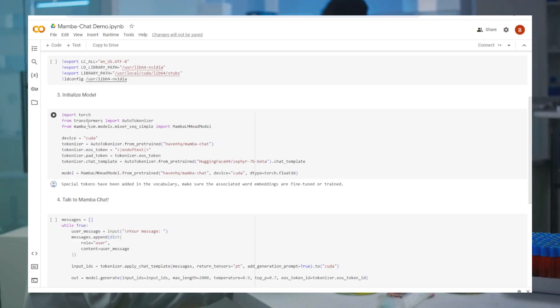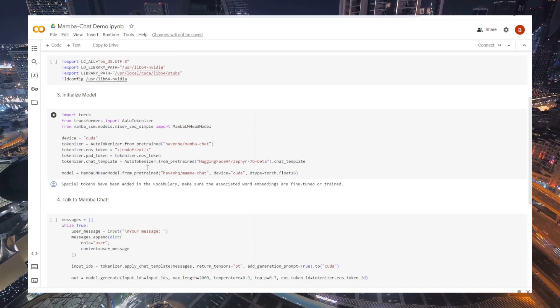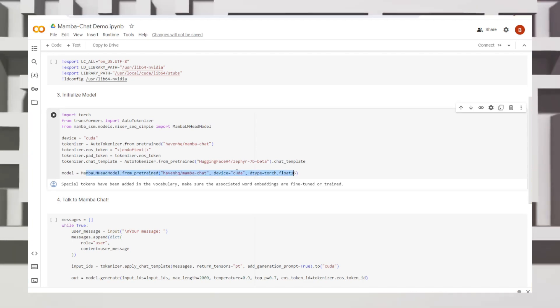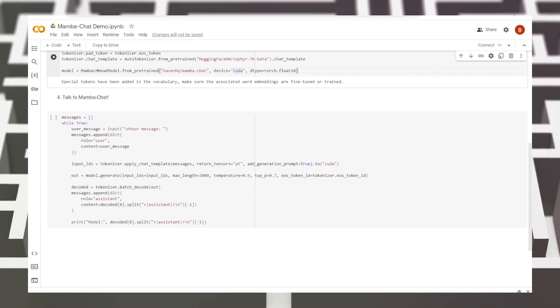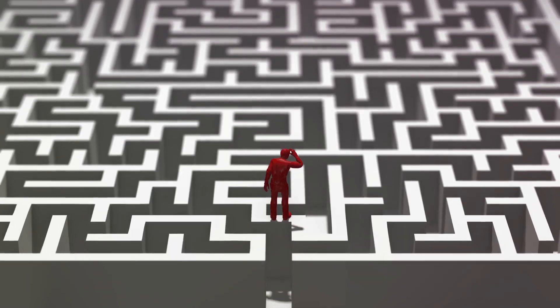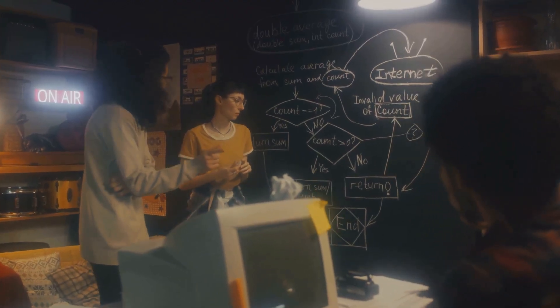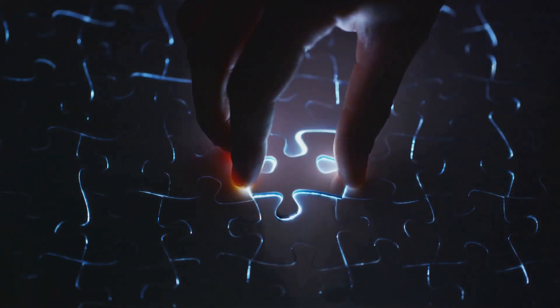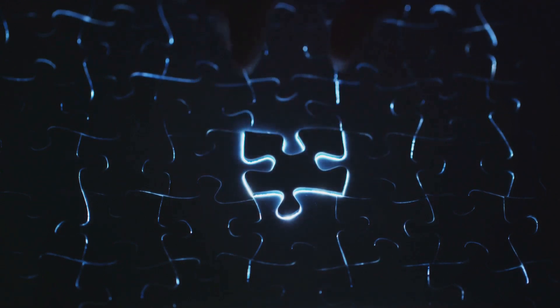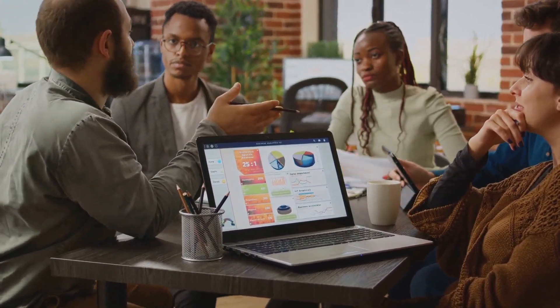Together, Mamba and LLMs create a dynamic duo that is shaping the future of technology. They are pushing the boundaries of what's possible, opening doors to new possibilities and opportunities. They are redefining how we approach and solve complex problems, making it easier and more efficient to find solutions. It's not just about the individual strengths of Mamba and LLMs, but about the synergy that arises when these two come together. They complement each other perfectly, each one amplifying the strengths of the other and compensating for its weaknesses. This powerful duo is a testament to the beauty of collaboration and synergy in technology.